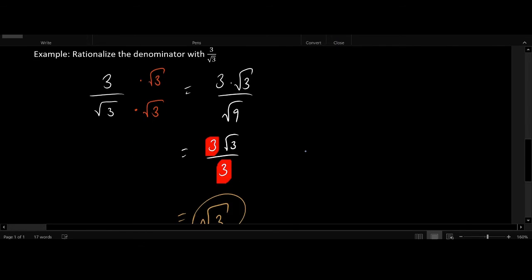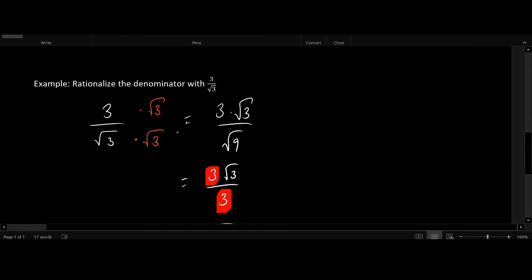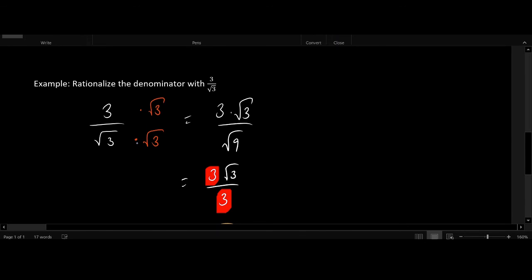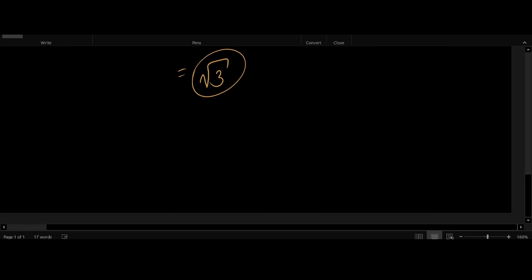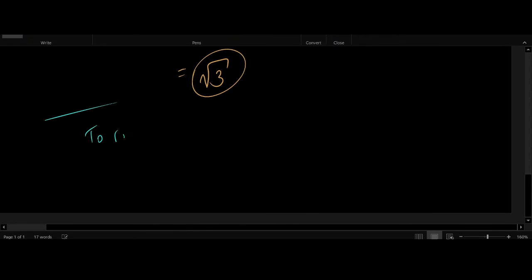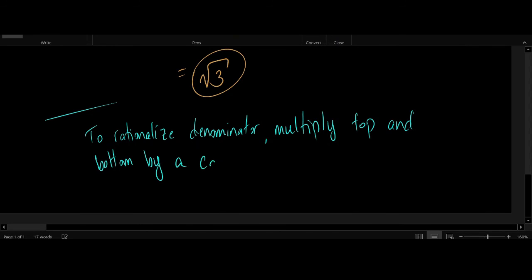Alright, so in general, if you're asked to rationalize the denominator, all that you need to do is multiply the top and bottom by another copy of the denominator. So let's just finish this by summarizing that to rationalize the denominator of a fraction, multiply top and bottom, the numerator and denominator, by a copy of the denominator.